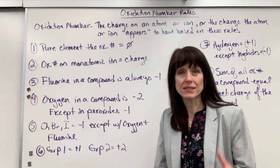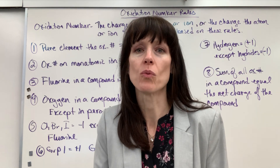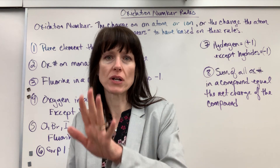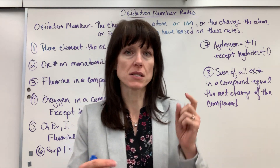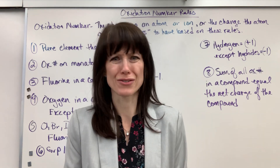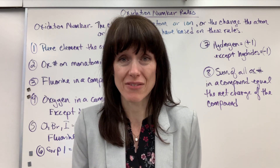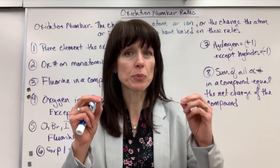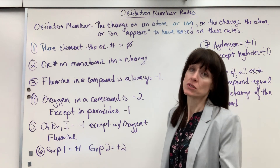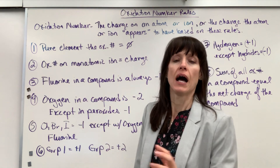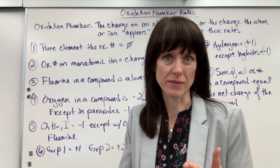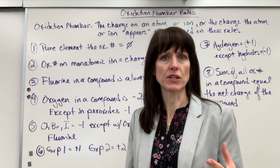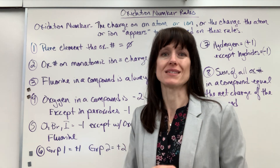Oxidation numbers are very closely related to charges, but not 100%. Oxidation numbers are a convention that we have created as chemists to show us the number of electrons that are gained or lost as you change from reactants to products. You're going to see some oxidation numbers and think, 'There's no way that just gained six electrons, or lost seven.' You're right — it's not. But when you look at the change in oxidation numbers, that's 100% accurate. Follow these rules and I promise it will make sense.